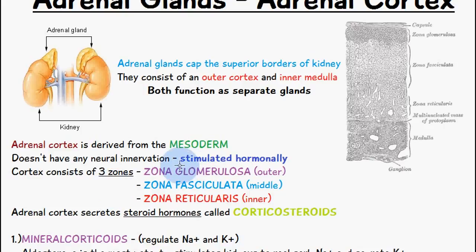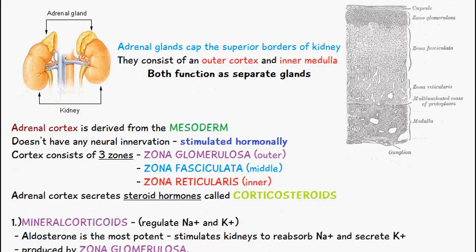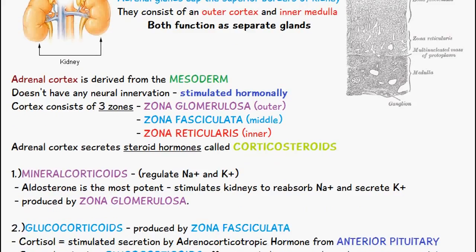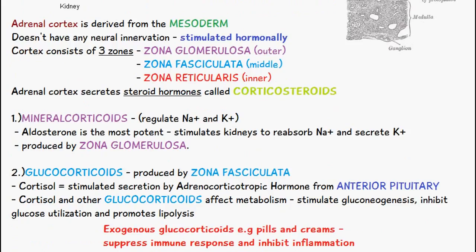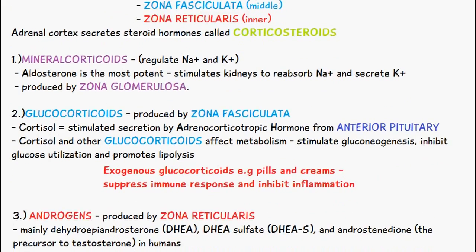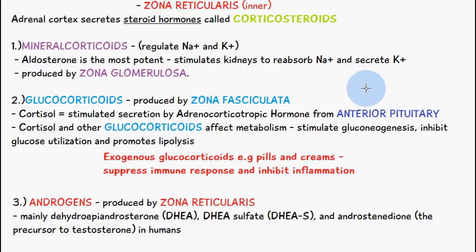The adrenal cortex consists of three zones: zona glomerulosa, zona fasciculata, and zona reticularis — the outer, middle, and inner zones respectively. The adrenal cortex secretes steroid hormones called corticosteroids, and the initial synthesizer for these is cholesterol, which will be covered in a separate video.